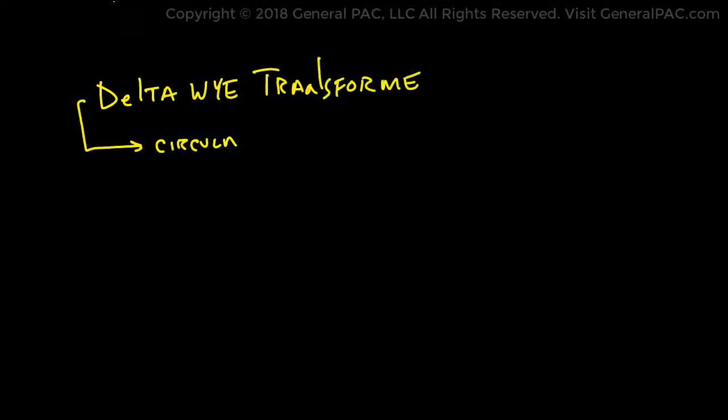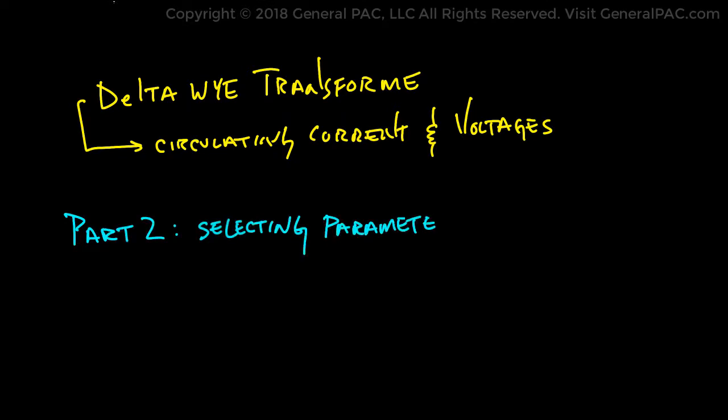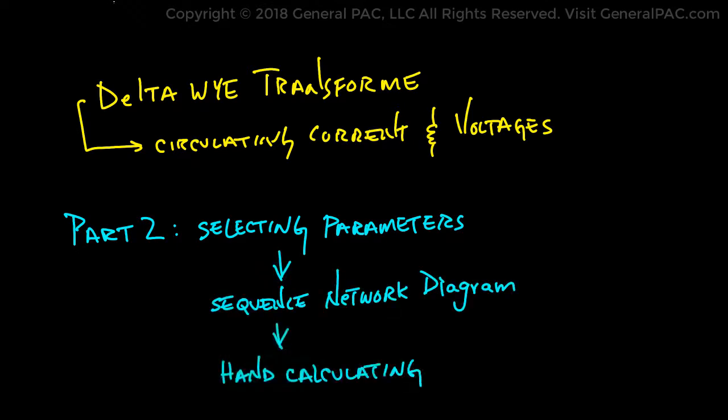Delta Y transformer connection and circulating currents and voltages. Part 2 will be dedicated to selecting parameters for our power system. These parameters are essential for drawing the sequence network diagrams and hand calculating short circuit current and voltage quantities.